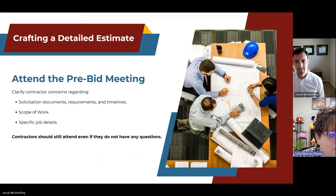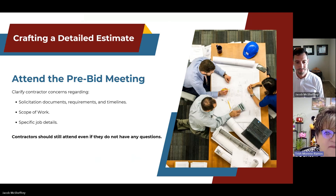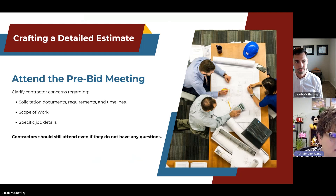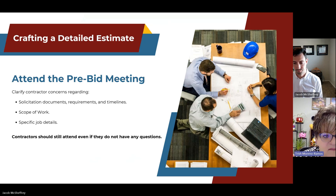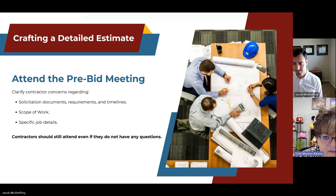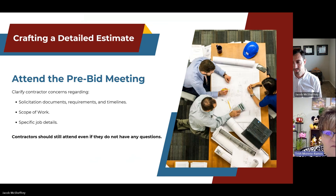Make sure you attend the pre-bid meeting — this is your chance to ask direct questions to the contracting officer. Pre-bid meetings are gatherings scheduled after the invitation for bids or requests for proposals are advertised. The objective is to explain the details of the solicitation documents, including timelines, requirements, scope of work, and specific job details. You should attend even if you don't have questions, as it could give you insights not in the documents. This is the only time a prospective bidder is permitted to request clarifications directly.